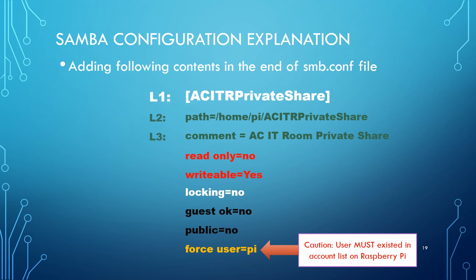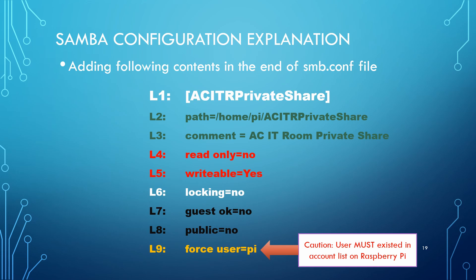Lines 1, 2, and 3 are similar to the public folder setting: set the share folder name, the folder path, and a comment if needed. Lines 4 and 5 set whether the share folder is read-only or not. Line 6 indicates whether the file is locked when accessed. Lines 7 and 8 set the folder so it does not apply to the public. Line 9 sets user pi as the login user. We then need to set the Samba password for the pi user in the following instruction.